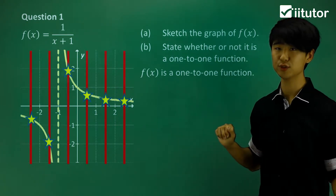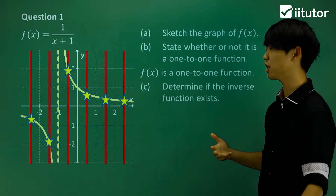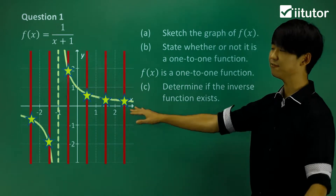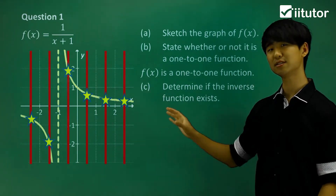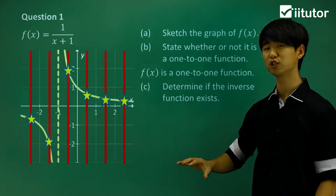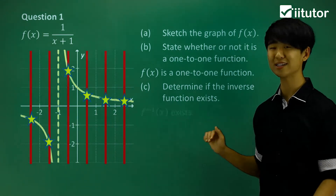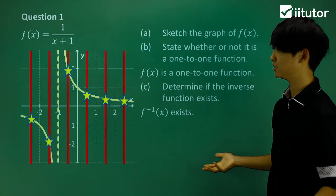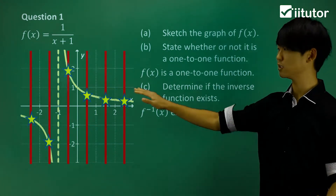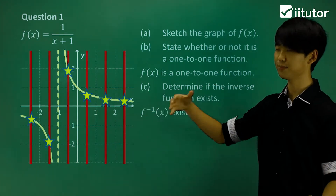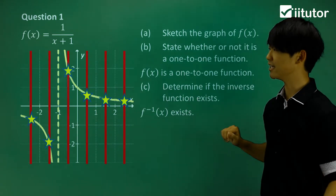That leads to the next part, which asks me to determine if an inverse function exists. For an inverse function to exist, the original function has to be a 1-to-1 function. So in part c, yes, an inverse function exists — purely because the original function is 1-to-1. We'll try and sketch this later on.